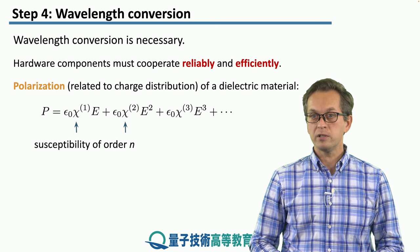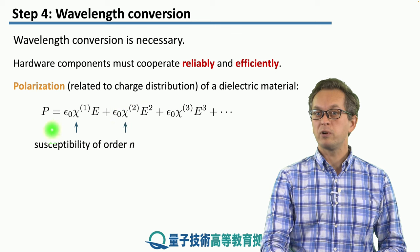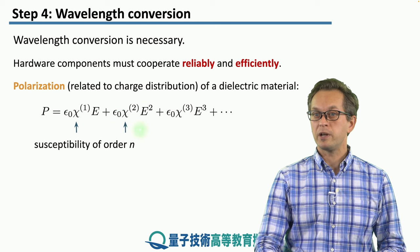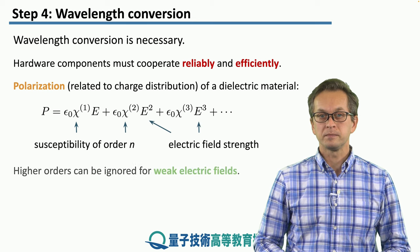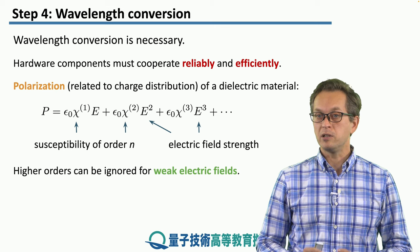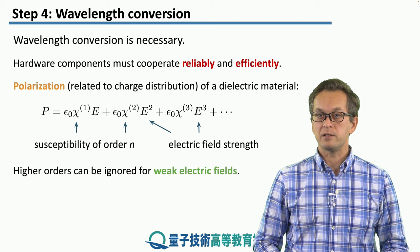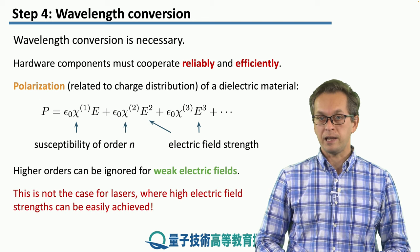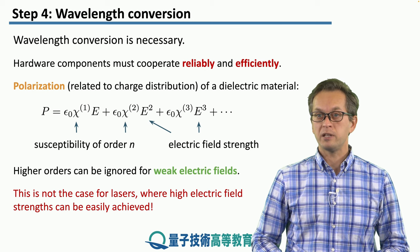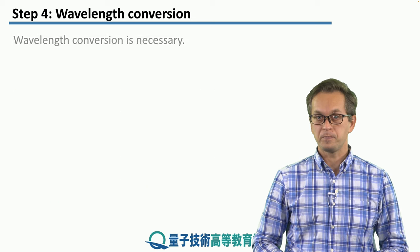The higher orders — the nonlinear orders — for example chi2, represent how strongly the polarization changes with respect to the square of the electric field strength. Higher orders can be ignored if the electric field is weak. But since we are using lasers, which are capable of producing very intense, strong electric fields, we have to take them into account as well. And in fact, it's these nonlinear processes that will allow us to achieve wavelength conversion.